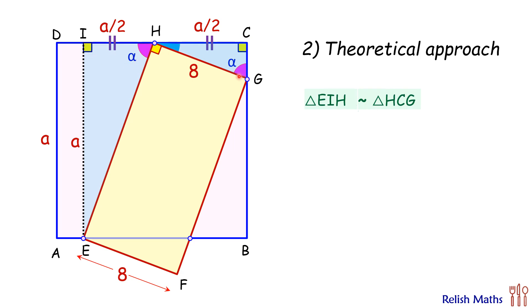And thus the ratio of corresponding sides will be equal. We can say that EI/EH will be the same as HC/HG. Putting the values here, EI is A centimeters, EH is what we are interested to find.